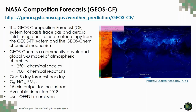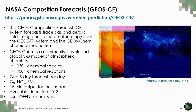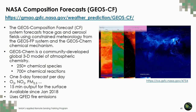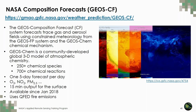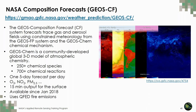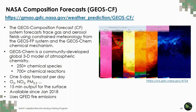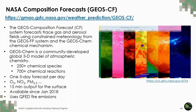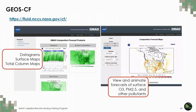The GeosCF forecast uses constrained meteorology from the GeosFP system along with the GEOS-Chem chemical mechanism. GEOS-Chem is a community-developed global three-dimensional model of atmospheric chemistry consisting of over 250 chemical species and over 700 chemical reactions. CF output is available every 15 minutes for the surface, and this forecast has been run since January of 2008. You can find maps and datagrams of CF output on FLUID, including surface concentrations of CO, ozone, nitrogen dioxide, sulfur dioxide, and PM 2.5 for different regions as well as column quantities.